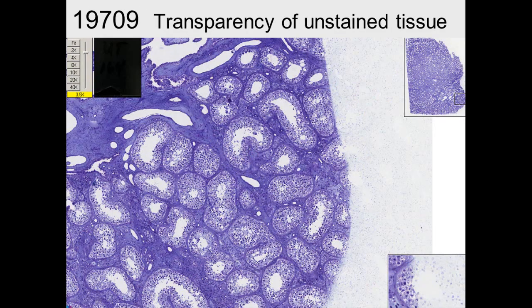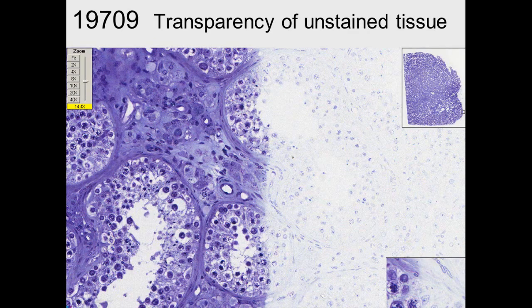Now slide 19709 shows you that tissue is largely transparent until it's stained. That's what tissue is. It's transparent. And here you can see where the stain did not stain all the tissue. And you can see through the area that there was no stain.